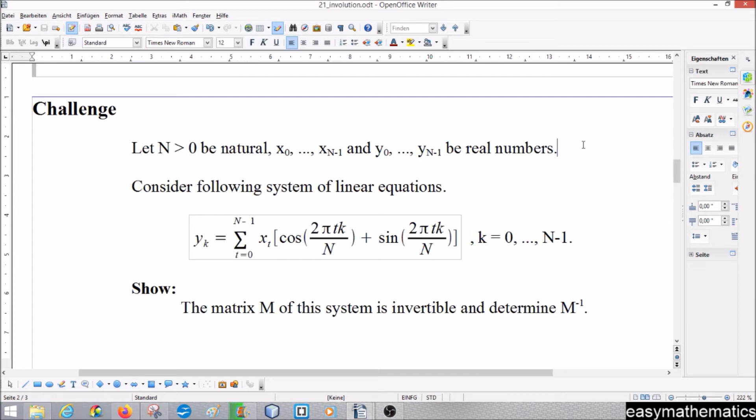yₖ equals the sum from t = 0 to N-1 of xₜ times [cosine of (2πtk/N) plus sine of (2πtk/N)], for k = 0 to N-1. This is a system of linear equations.